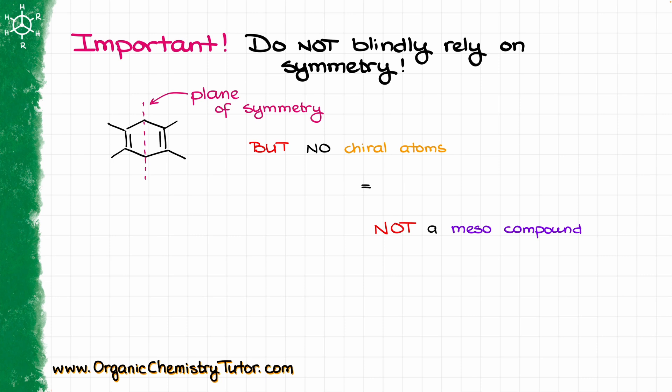Just because a molecule does have a plane of symmetry, it does not mean it's a meso compound. Remember that a meso compound needs to have chiral atoms. A regular symmetrical molecule without chiral atoms is not going to be a meso. The example I have here on screen is a very symmetrical molecule — actually it has two planes of symmetry, the vertical one and the horizontal one — but we do not have any chiral carbons here, and because of that, that is not a meso compound.